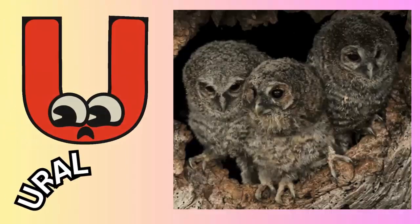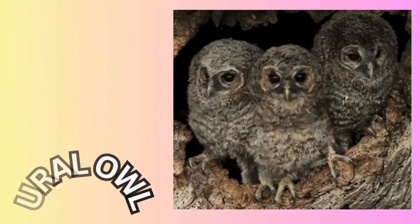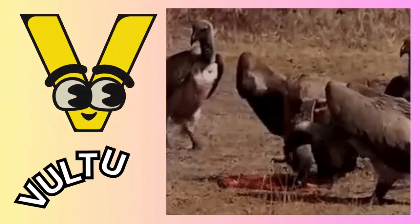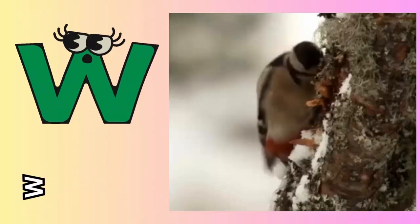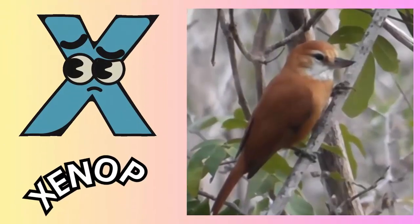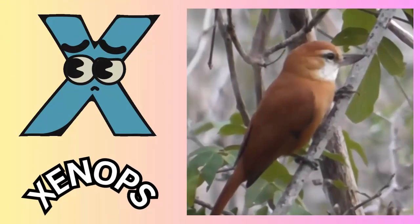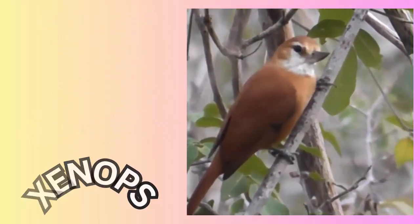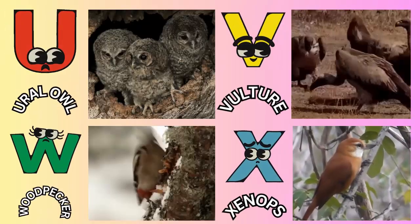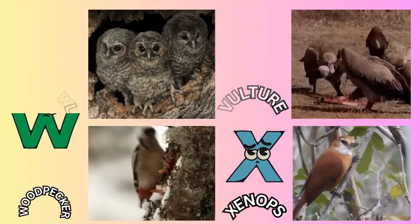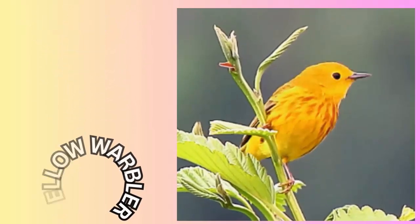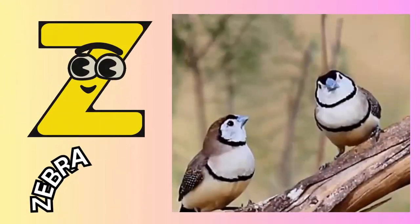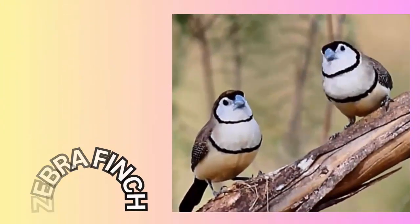U. U for ural owl. V. V for vulture. W. W for woodpecker. X. X for xenops. Y. Y for yellow warbler. Z. Z for zebra finch.